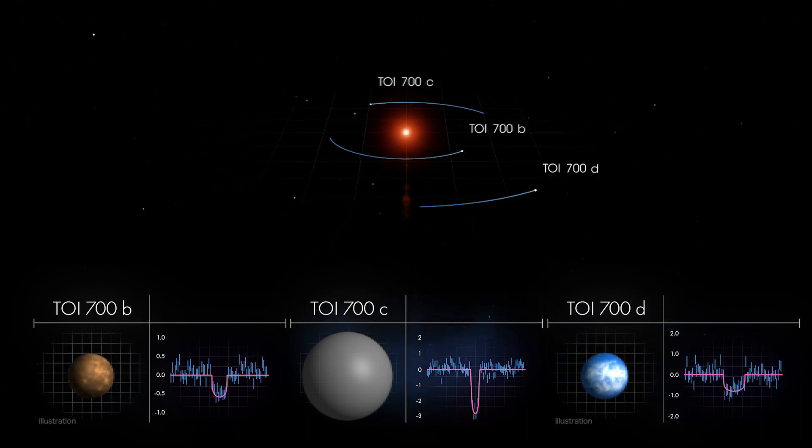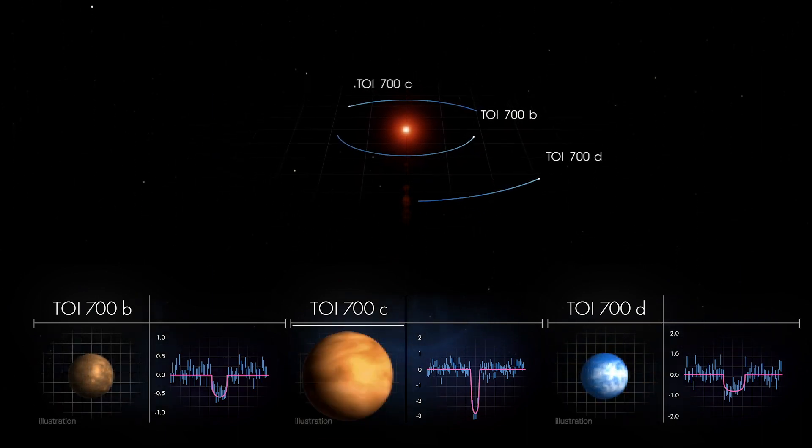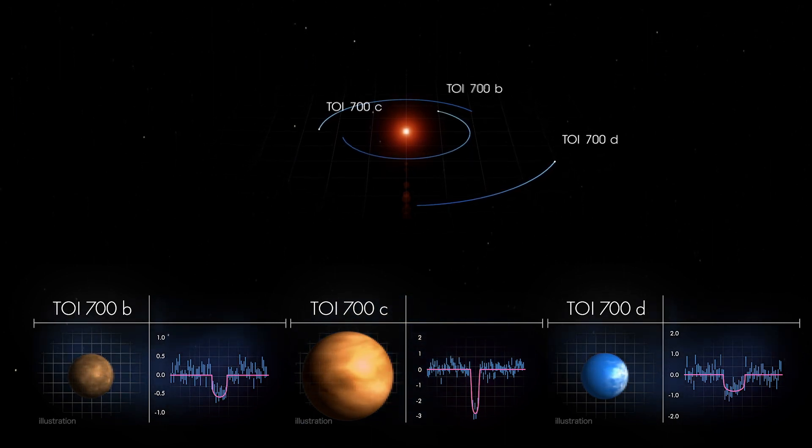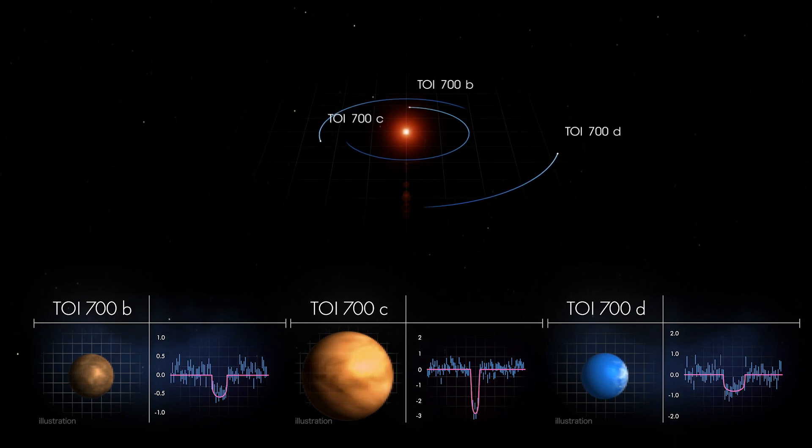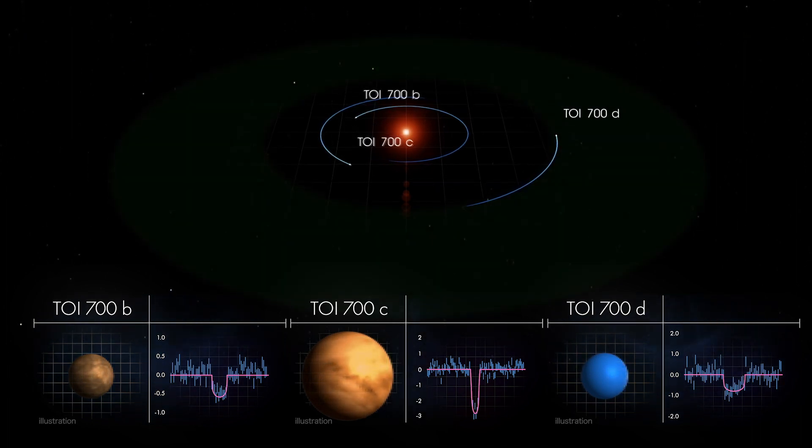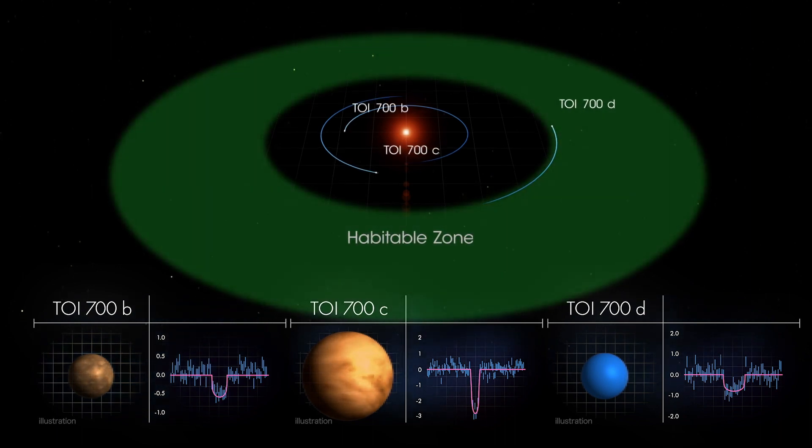The middle world is more than twice as large and most likely made of gas. All three may be tidally locked, rotating just once each orbit, so the same side always faces the star. But most importantly, TOI-700d is within the star's habitable zone.